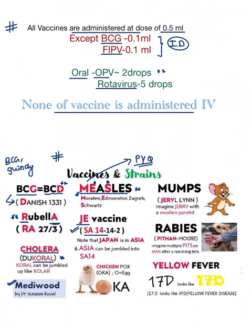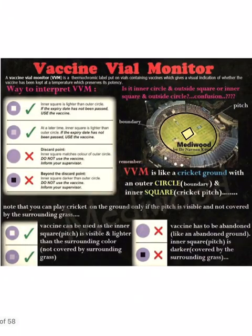You can remember things associated with Japan to help recall. Mumps uses the Jeryl Lynn strain. Rabies uses the Pitman-Moore strain. Yellow fever uses the 17D strain — you might remember from school 'yellow dirty fellow,' so 17D is the yellow fever strain.